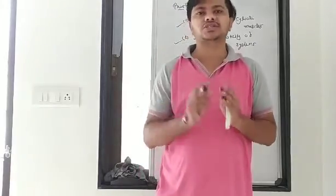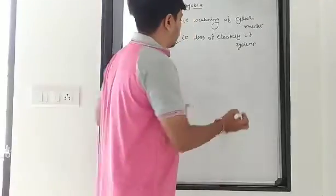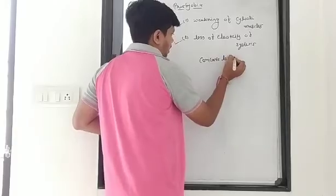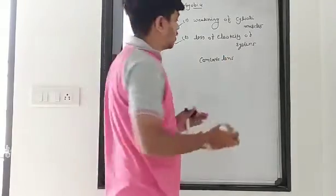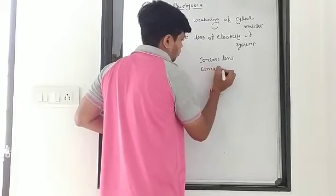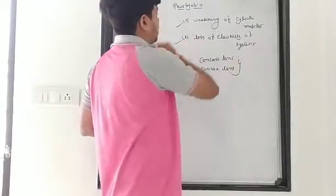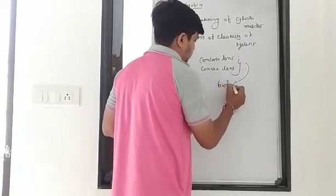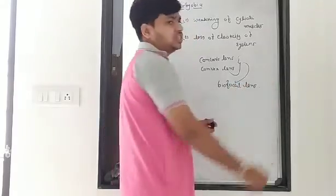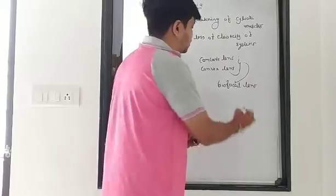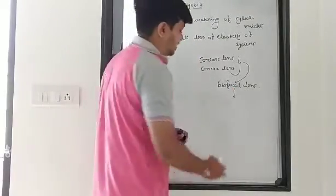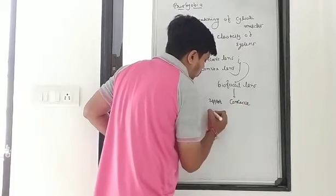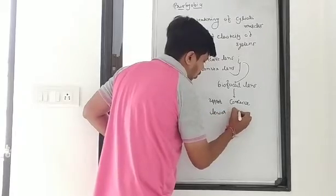So how can you correct it? If you want to correct far vision — that is, the near-sightedness component — you have to use a concave lens. And if you want to see a near object clearly, you have to use a convex lens. For presbyopia, you have to combine both lenses, which is known as a bifocal lens — having both a concave and a convex lens.